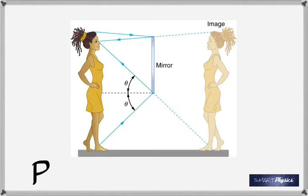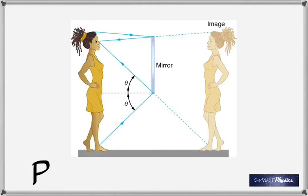There are four characteristics of an image. What about the size of the object and the image? The object is the same size. What about the distance? Distances are always measured from the reflecting surface. This distance is called DO — object distance — and this distance is called DI. What's the relation between DO and DI in this case? It's equal.